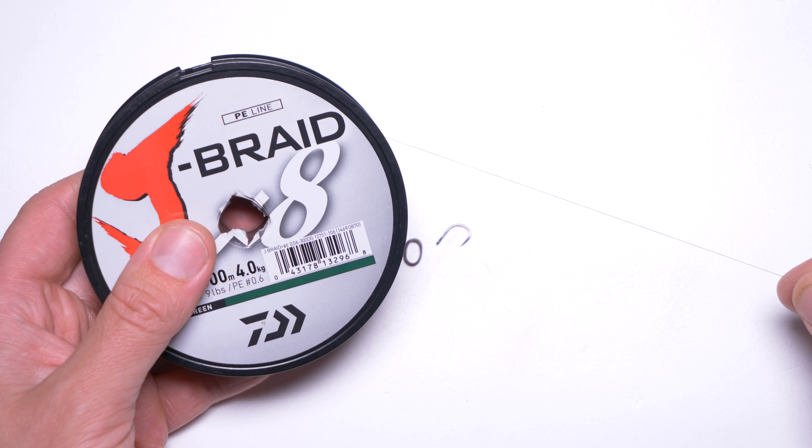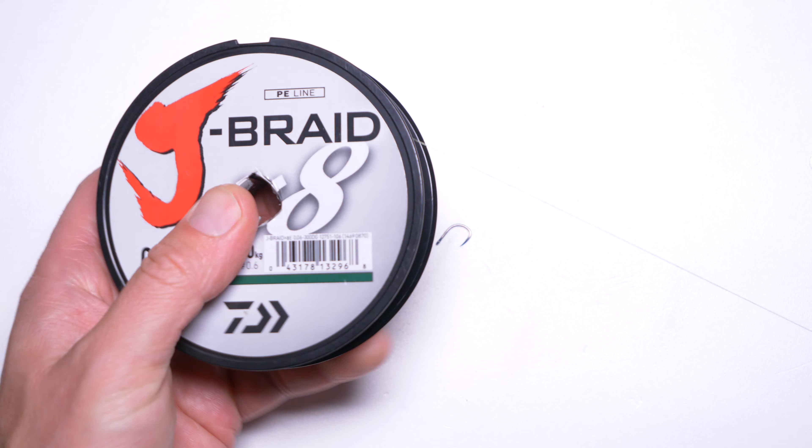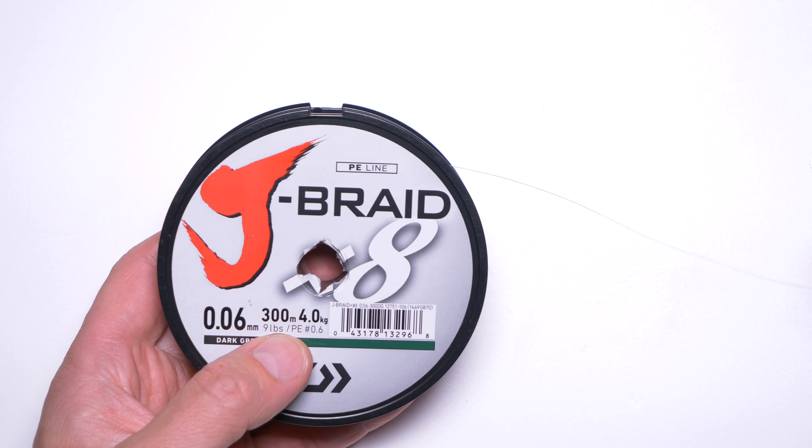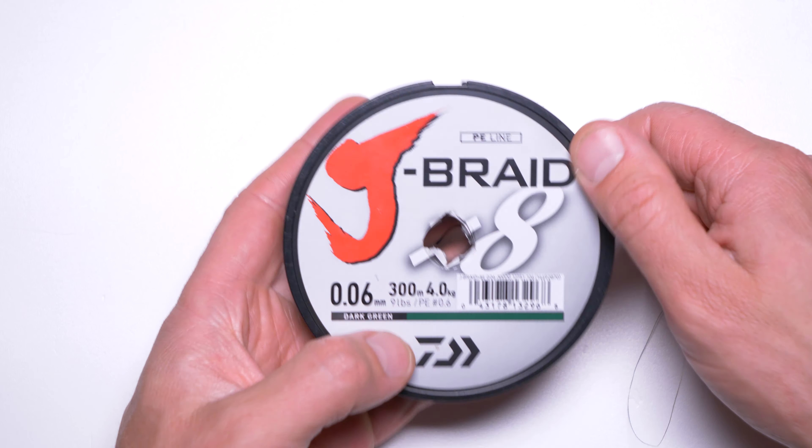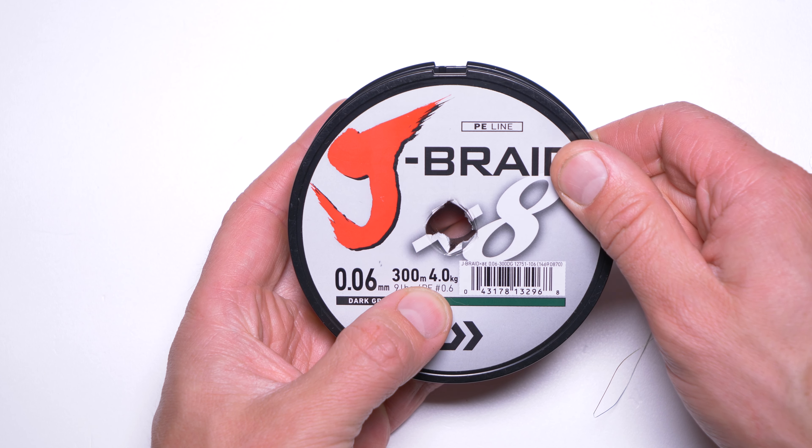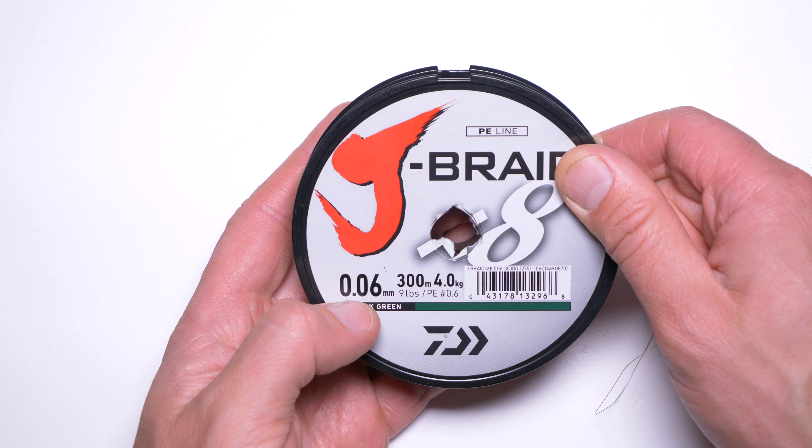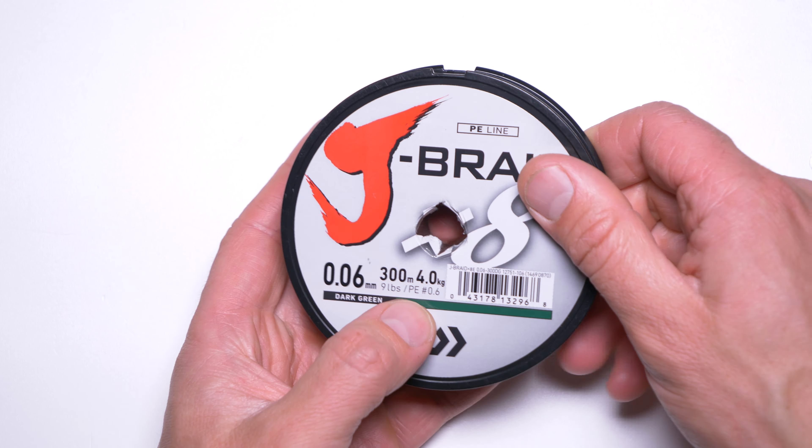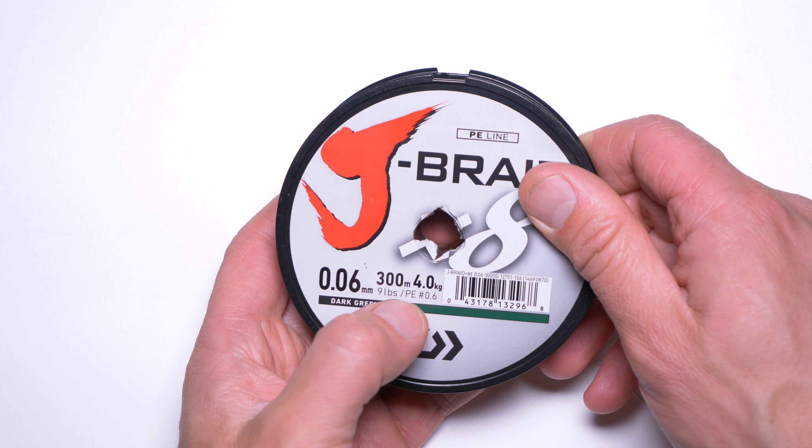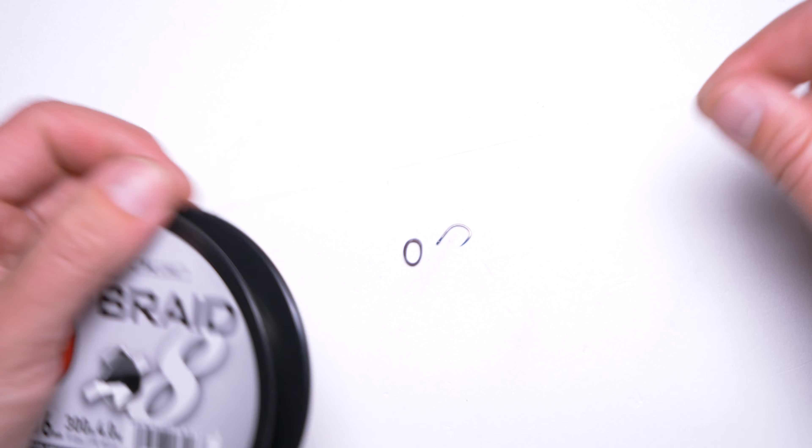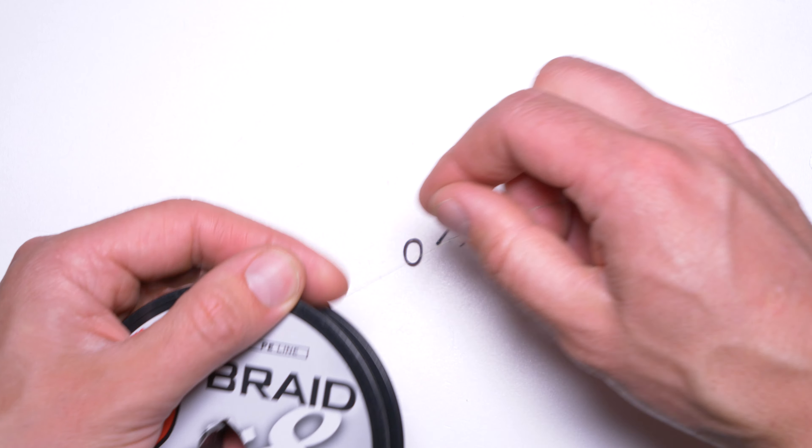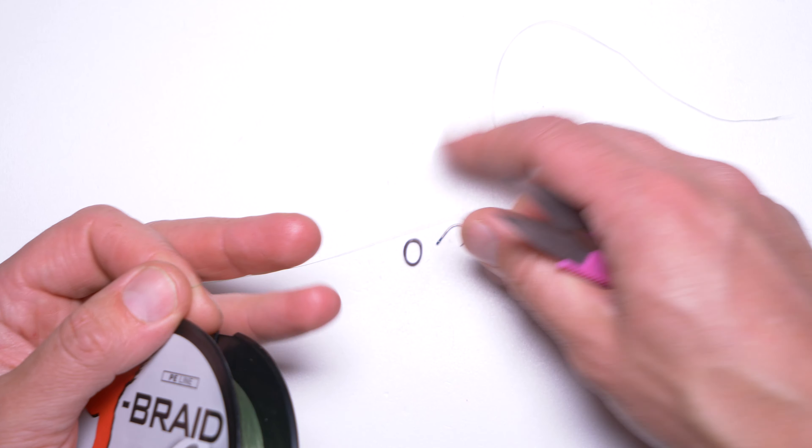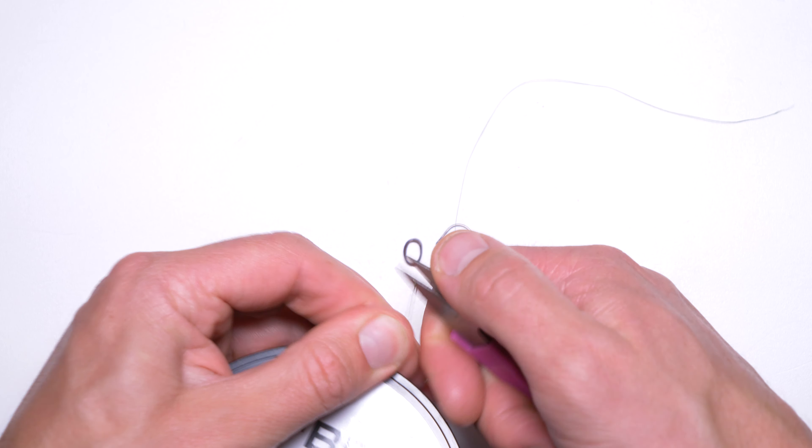Then you need quite fine braid line. I'd say the finer you can get, the better. In this case I'm using Daiva G braid at 0.06 millimeters diameter, but it's not that fine—in Japanese marking it's 0.6, so it's about 0.12. Still relatively fine. I'll need about 20 centimeters of that.